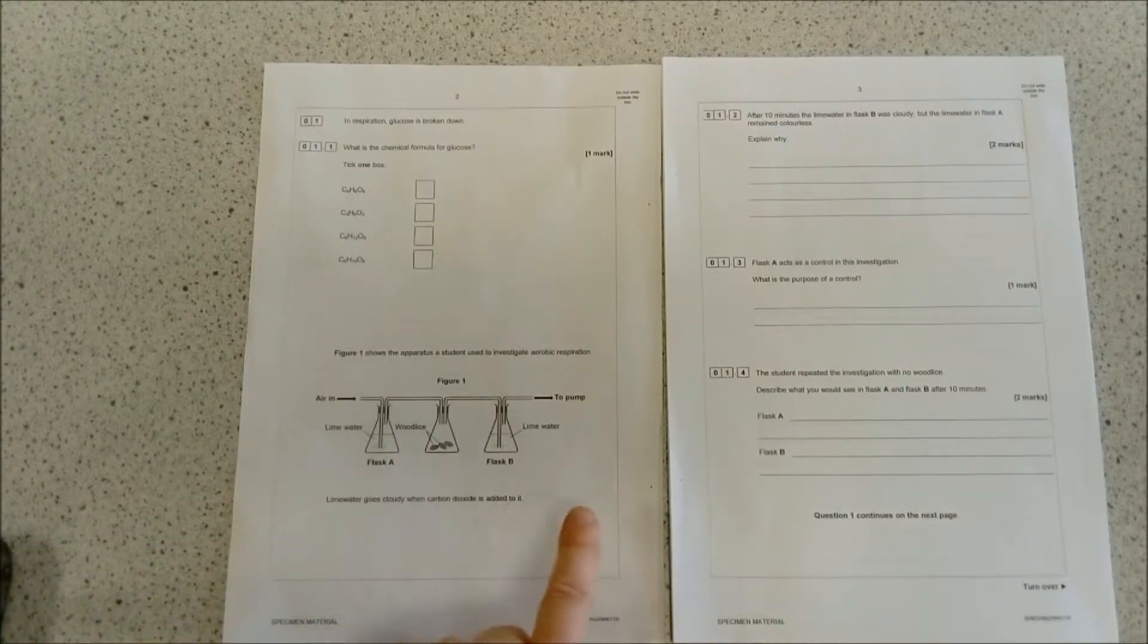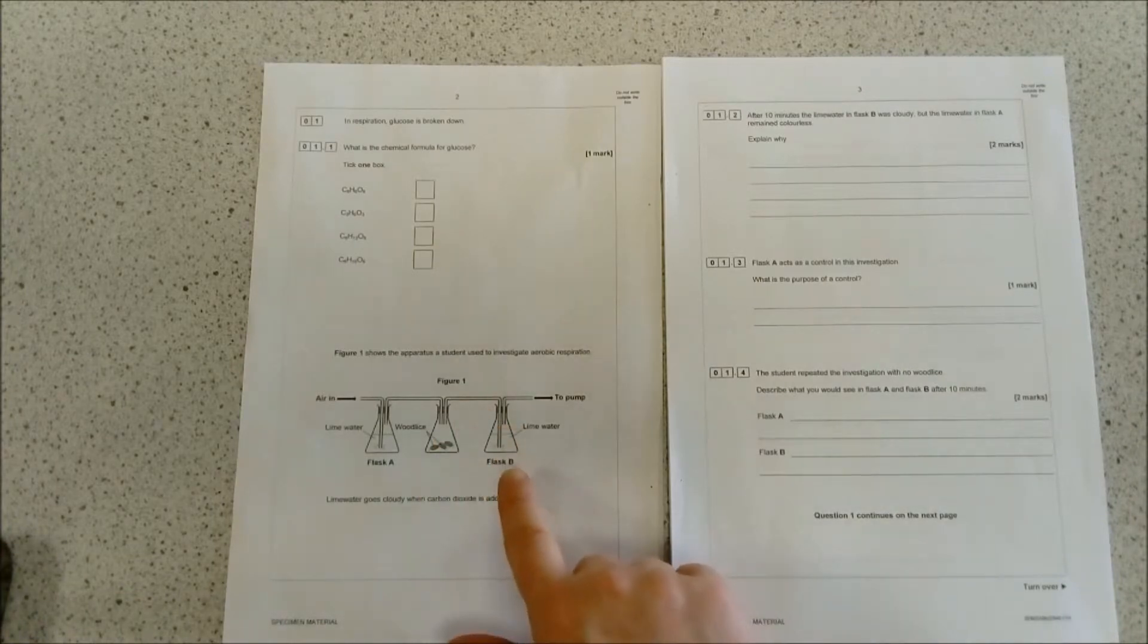It shows a set of apparatus. We've got air going in, going through lime water in flask A, some sort of wood lice—they could replace that with any other sort of organism, they might even replace it with plants in some cases—and the air going back out through some more lime water in flask B.